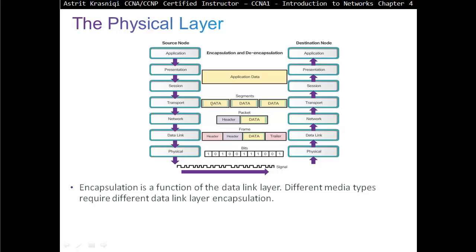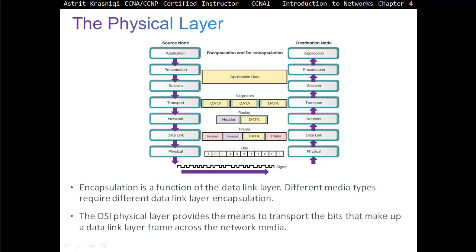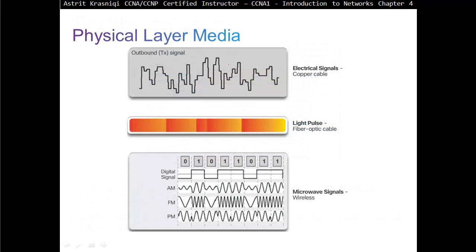Encapsulation is a data link layer function. Different media types require different data link layer encapsulation. The data link layer chooses how to encapsulate depending on the medium — copper or wireless — and prepares the bits accordingly. The physical layer is not an intelligent layer; it simply moves those zeros and ones. We have three different types of physical layer media: electrical signals (copper), fiber optic cable which transmits through light pulses, and microwave signals which is wireless.